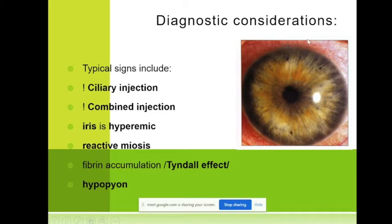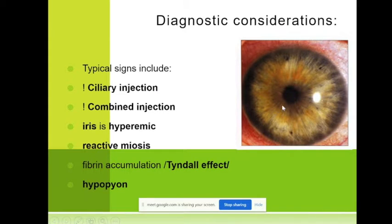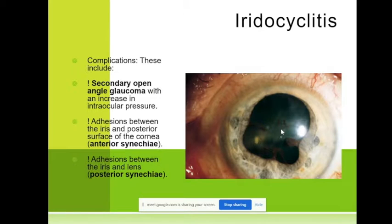We also have miosis — you can see a constricted pupil. There is the Tyndall effect, which I mentioned, and hypopyon. So when we have iridocyclitis, the complications can appear very quickly — within several hours of the beginning of iridocyclitis.